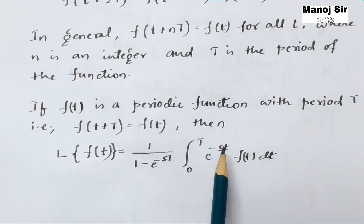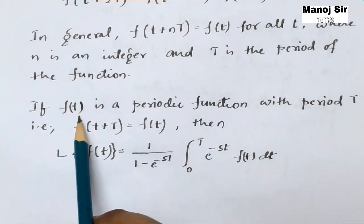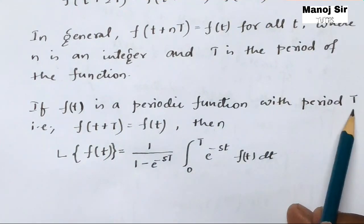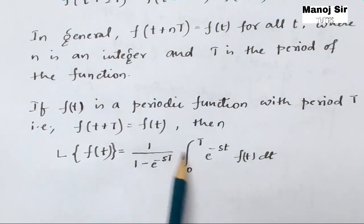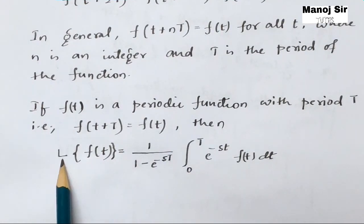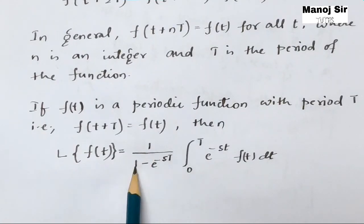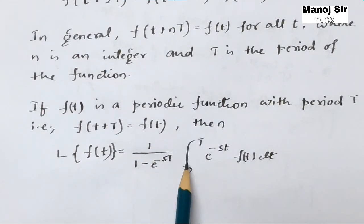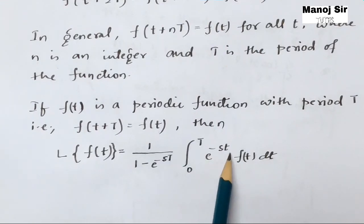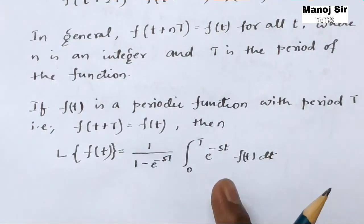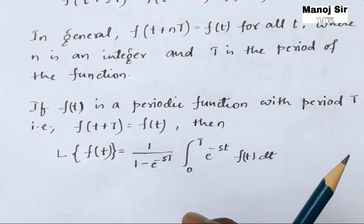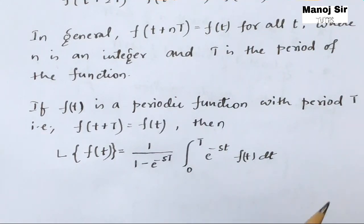We need to integrate with respect to t where the limit is from zero to capital T, which is the period of the function. Just remember this formula: L{f(t)} equals one over (1 minus e to the power minus sT) times the integral from zero to T of e to the power minus st times f(t) dt. We will now solve two very important problems in videos 37 and 38. Thank you for watching.